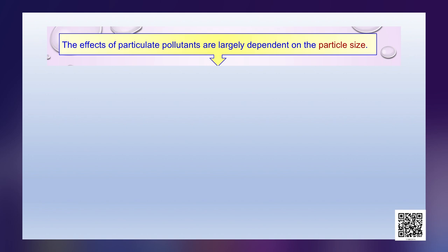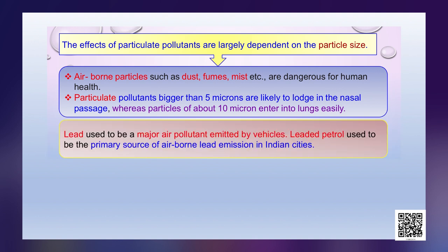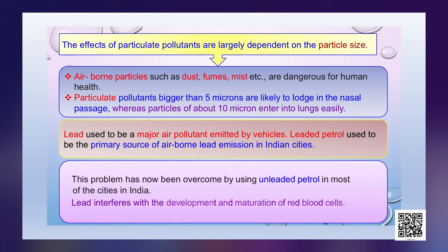The effects of particulate pollutants are largely dependent on the particle size. Airborne particles such as dust, fumes, mist, etc. are dangerous for human health. Particulate pollutants bigger than 5 microns are likely to lodge in the nasal passage, while particles of about 10 microns enter into the lungs very easily. Lead used to be a major air pollutant emitted by vehicles. Leaded petrol was the primary source of airborne lead emission in Indian cities, but this problem has been overcome by using unleaded petrol. Lead interferes with the development and maturation of red blood cells.